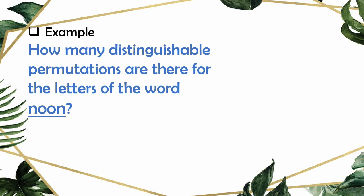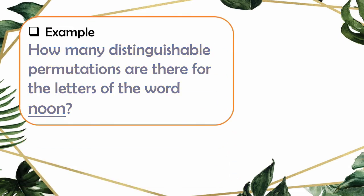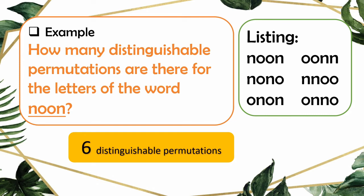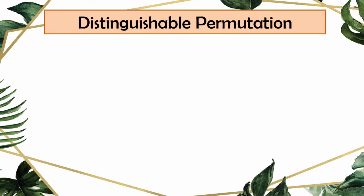Let's have this example: how many distinguishable permutations are there for the letters of the word NOON? You can use different techniques learned from Week 1. Listing all possible arrangements: N-O-O-N, N-O-N-O, O-N-O-N, O-O-N-N, N-N-O-O, O-N-N-O. So we have 6 distinguishable permutations. Is there a shortcut? Yes — we have the formula for distinguishable permutations.